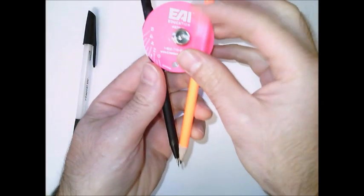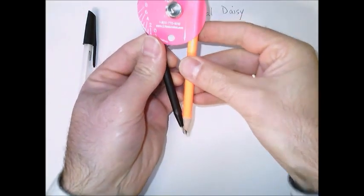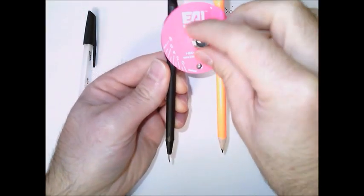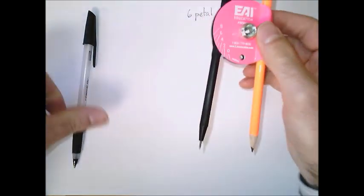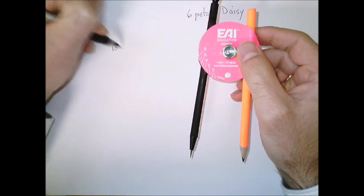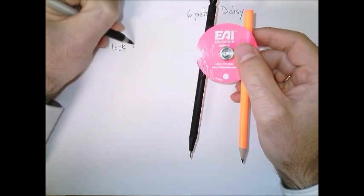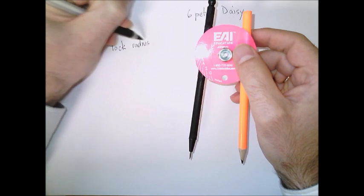We'll start with our compass. We want to make sure that our compass is set up correctly and you're going to fix your compass radius and lock it down. You want to make sure that your radius is locked because if it slips your construction is going to mess up.